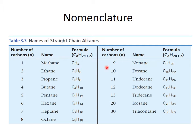The prefixes for the number of carbons are: meth for one, eth for two, prop for three, but for four, pent for five, hex for six, hept for seven, oct for eight, non for nine, dec for ten, undec for eleven, and so on. We're pretty much going to stay with ten and below.